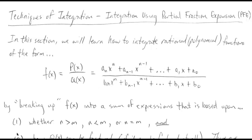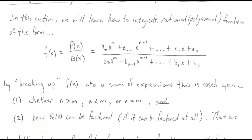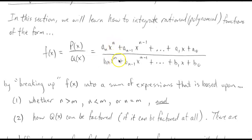We deal with rational functions in three different flavors. The first is whenever the degree of the numerator is larger than the degree of the denominator. We also have the case where the degree of the denominator is larger than the degree of the numerator. And then of course we have the case where the degrees of the numerator and denominator are equal.